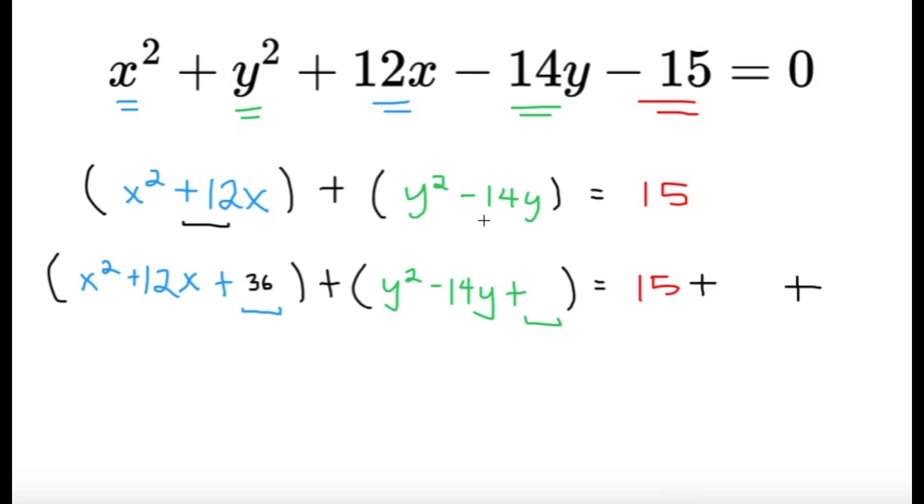All right, for the negative 14y, the coefficient of y is negative 14, half it we're going to get negative 7, we square it we're going to get 49. Now obviously since we added on the left hand side, we're also going to add on the right hand side, so we're going to add 36 and 49.